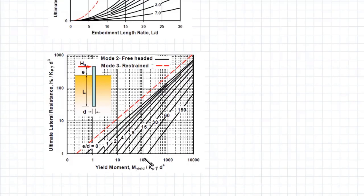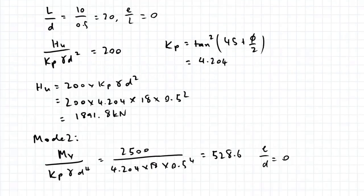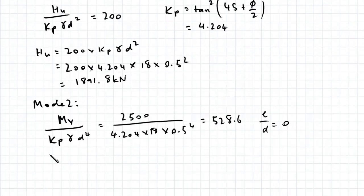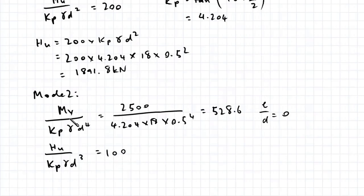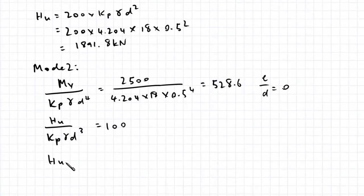If you find 528, that's roughly here. Project upwards to E on D equals 0, which gives us a value of roughly 100. So HU on KP gamma D cubed equals 100. Finally, we can find HU. That's 100 times 4.204 times 18 times 0.5 to the power of 3. This gives us a value of 945.9 kN.